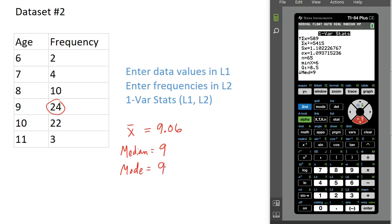So the mode is 9. With our frequency table, the mode is the one with the highest frequency. So there's mean, median, and mode for dataset 2, which was given in the form of a frequency table.